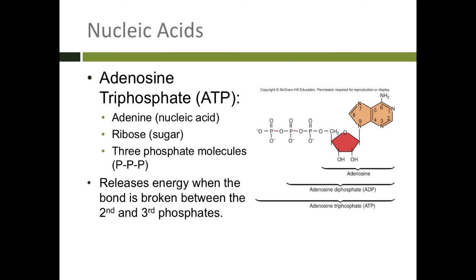Another nucleic acid that we don't think about too much as being a nucleic acid, but it is, is ATP. This is something that we use in the cell. You can see it has a nitrogenous base, a sugar, and in this case, it has three phosphate molecules. These phosphate molecules release energy when they're broken. So it's a great way for the cell to store energy for short term.